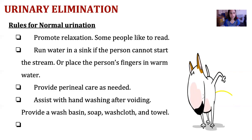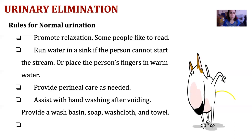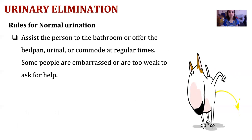Run water in a sink if the person cannot start the urinary stream. According to studies, if a patient has difficulty urinating, running the faucet and letting them hear the sound of water can psychologically help them urinate. Provide perineal care as needed to prevent infection. Assist with handwashing after voiding and always encourage patients to wash their hands. Provide wash-based soap and any other materials needed. Assist the person to the bathroom or offer the bedpan, urinal, or commode at regular times, as some people are embarrassed or too weak to ask for help.